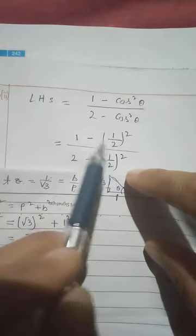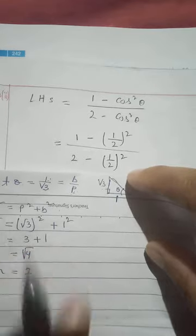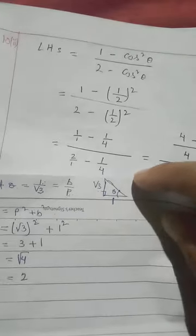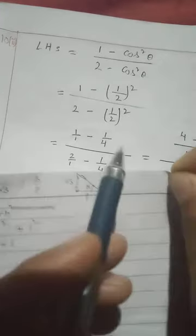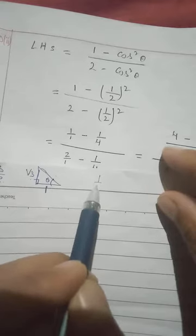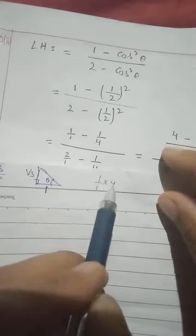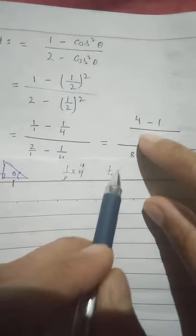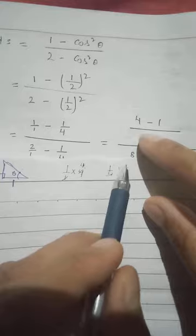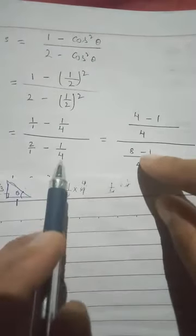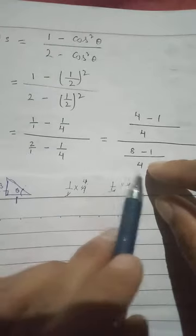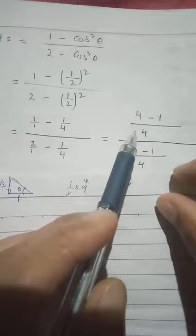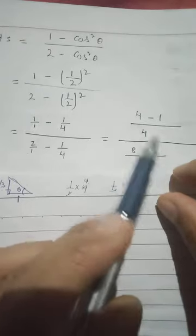Removing the squares: 1 - 1/4 over 2 - 1/4. Finding the LCM of 4 and 1, which is 4. Numerator: (4 - 1)/4 = 3/4. Denominator: (8 - 1)/4 = 7/4. The 4 in both denominators cancels out.